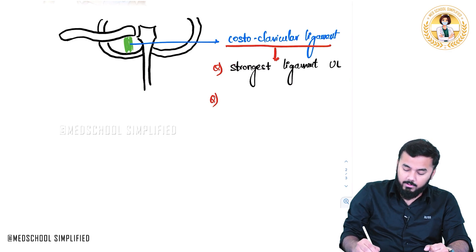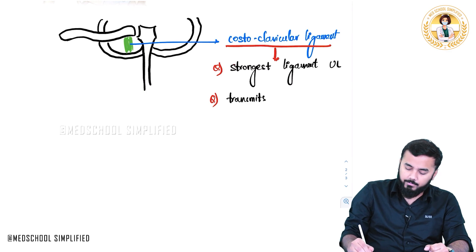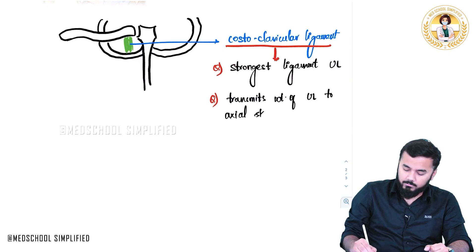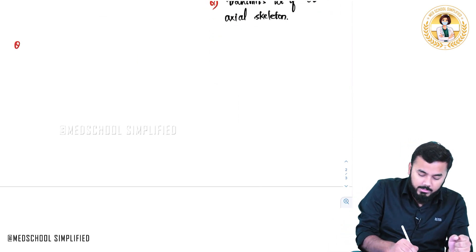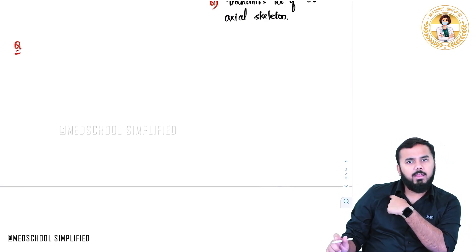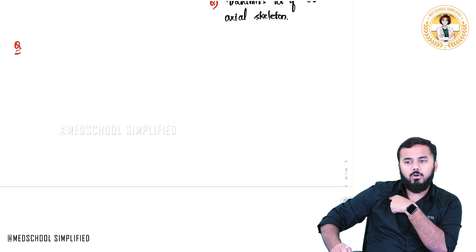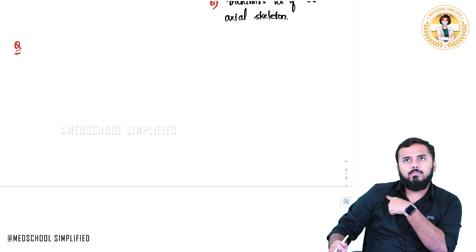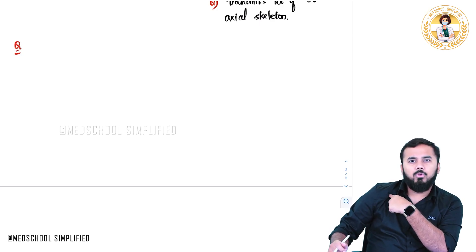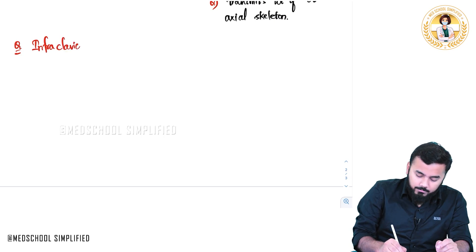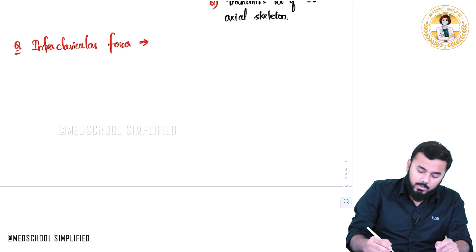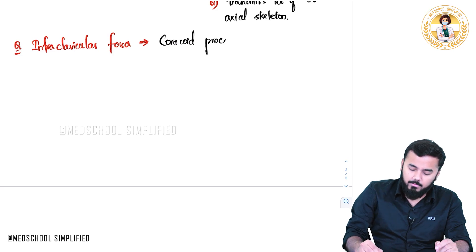The costoclavicular ligament is the one which transmits the weight of the upper limb to the axial skeleton — this is an important point to keep in mind. Additionally, just below the clavicle we have the infraclavicular fossa, and when you palpate into this fossa you can feel the coracoid process of the scapula.